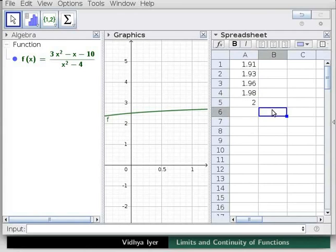Let us find the right hand limit of this function as x tends to 2. We will choose values of x greater than but close to 2.